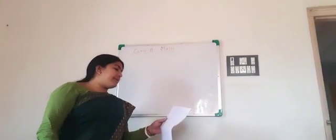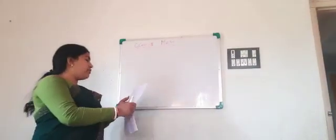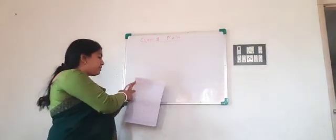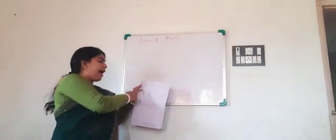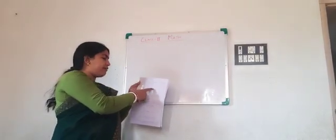First is completing the table. I have given you a table in your worksheet. There are different shapes drawn in the table. You have to write the name of the shape and number of sides and the number of corners.